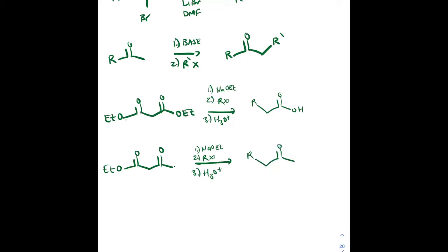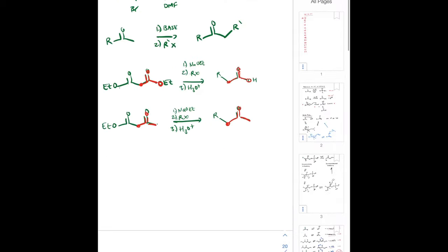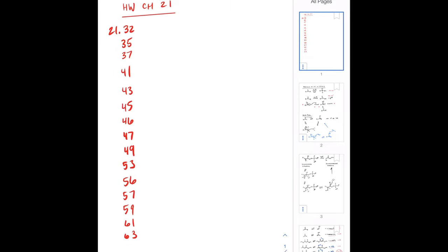These reactions have mechanisms that may seem weird at first, but the decarboxylation step — where electrons shuffle through a six-membered transition state to release CO₂ — is quite fun once you get it. We should be able to jump straight to the final product. Chapter 21 homework: problems 32, 35, 37, 41, 43, 45, 46, 47, 49, 53, 56, 57, 59, 61, and 63. Practice as much as you want beyond that.